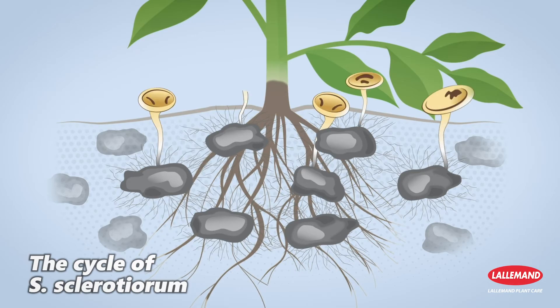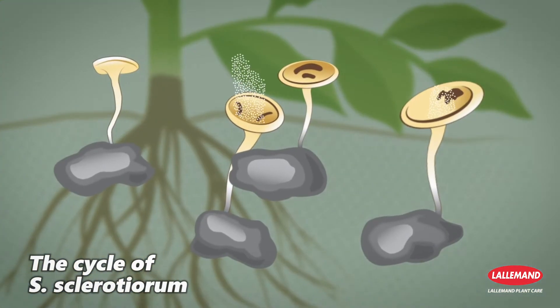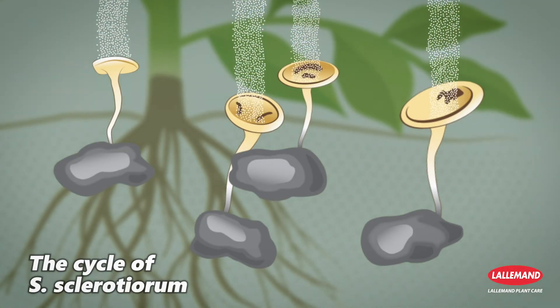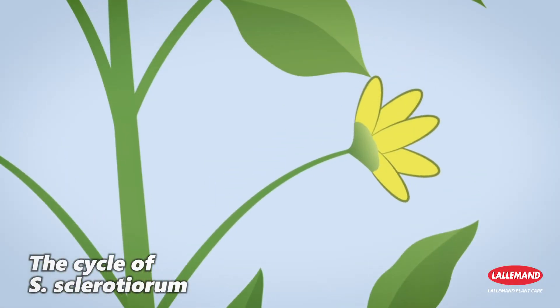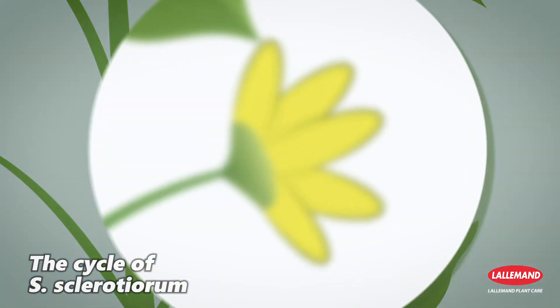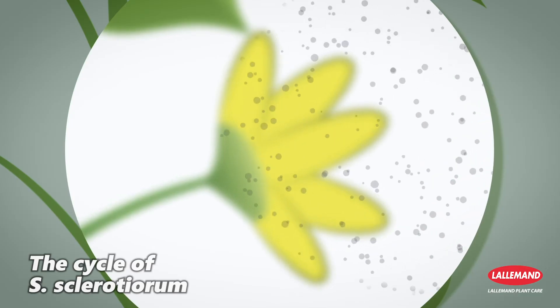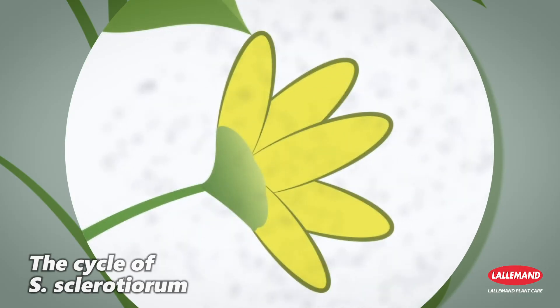The sclerotia form apothecia and emit millions of spores which, transported by wind and water, contaminate the above-ground parts of crops — particularly the flowers, which are very sensitive to the pathogen.